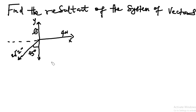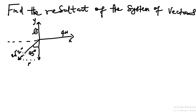Hi, good day. In this tutorial we shall be solving this problem before us. The equation says: find the resultant of the system of vectors. These are forces. How do we find the resultant? How do we find the sum? To do that, we shall resolve this vector, which is 2√2 Newton, vertically and horizontally. Let us label this P — we want to find the horizontal component of this vector — and let us call the vertical component Q.